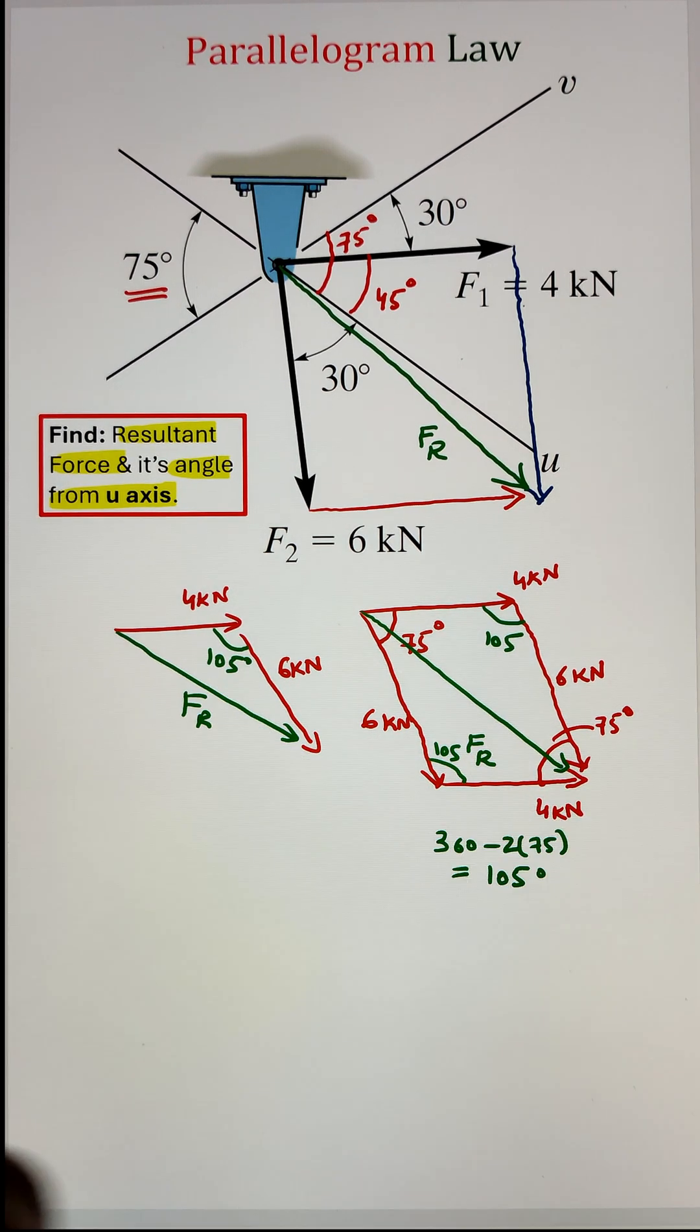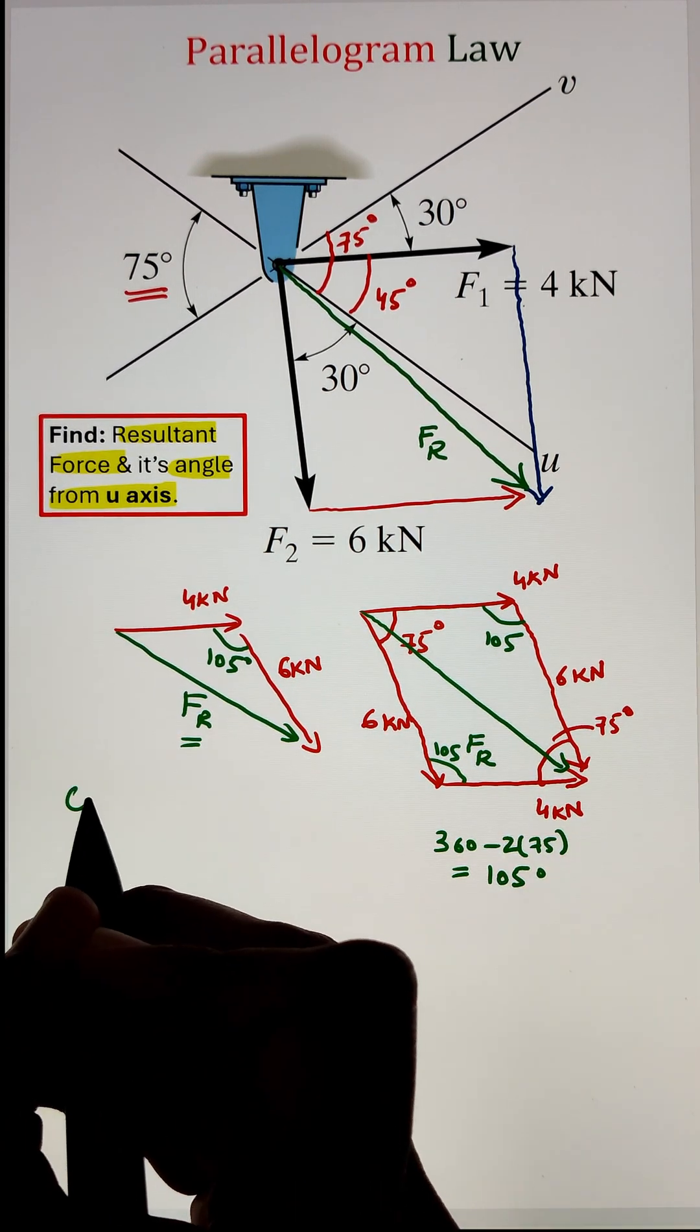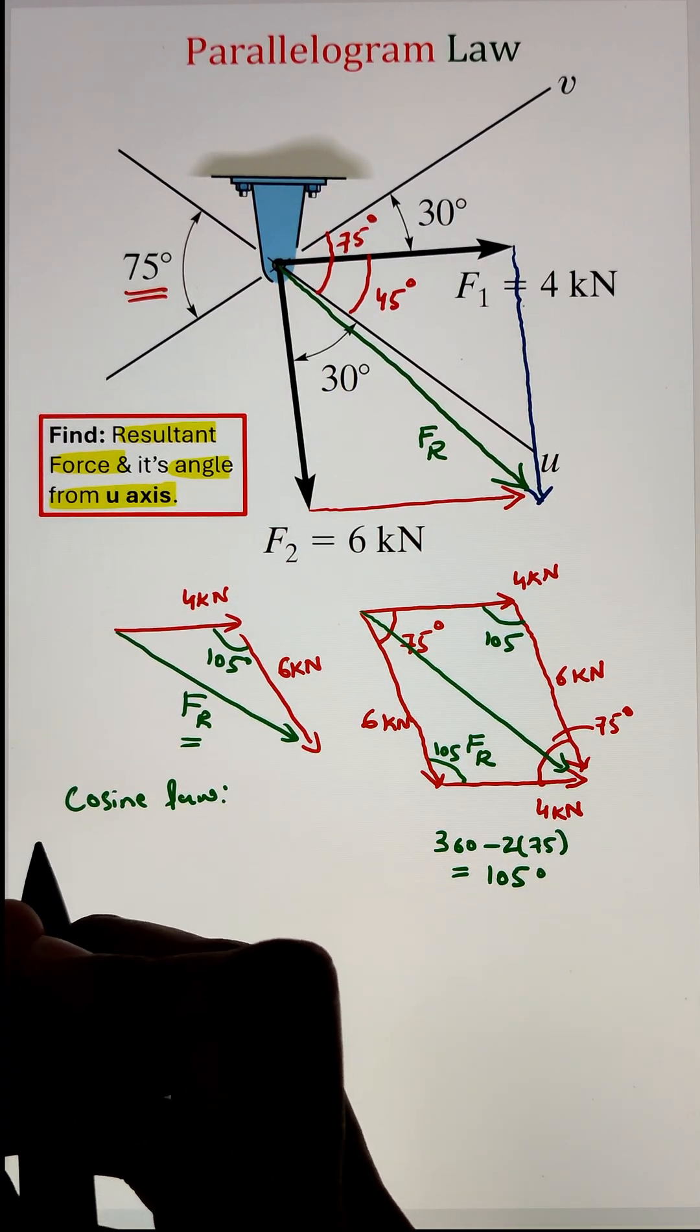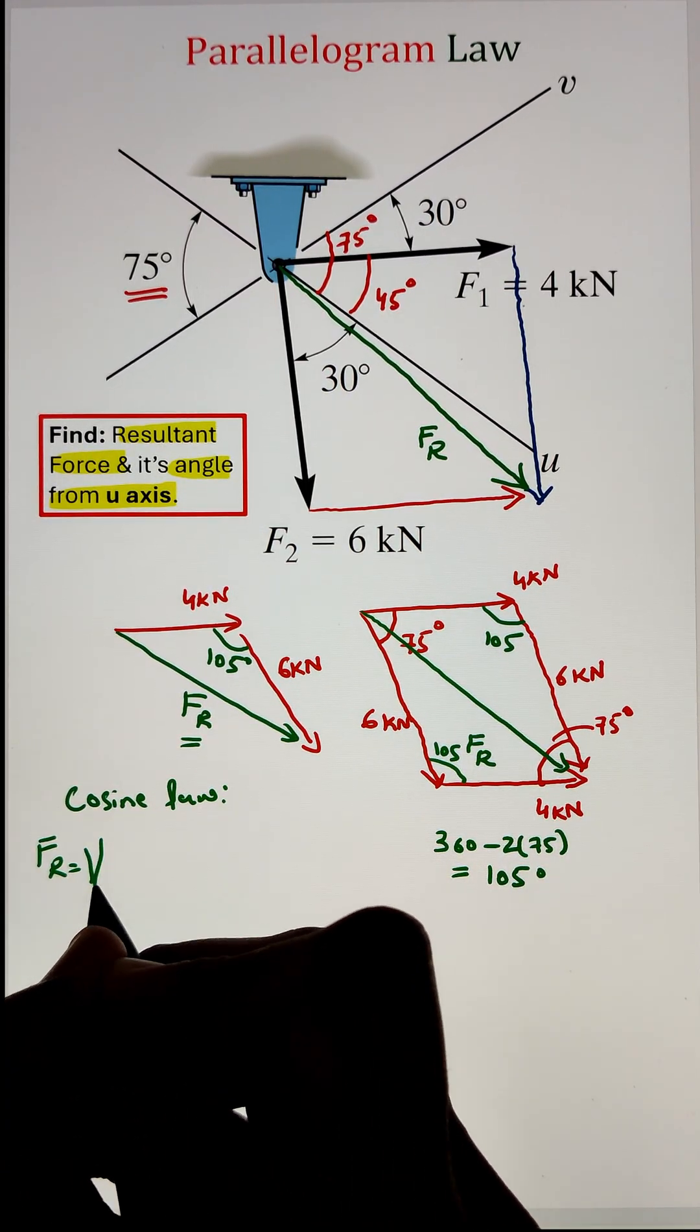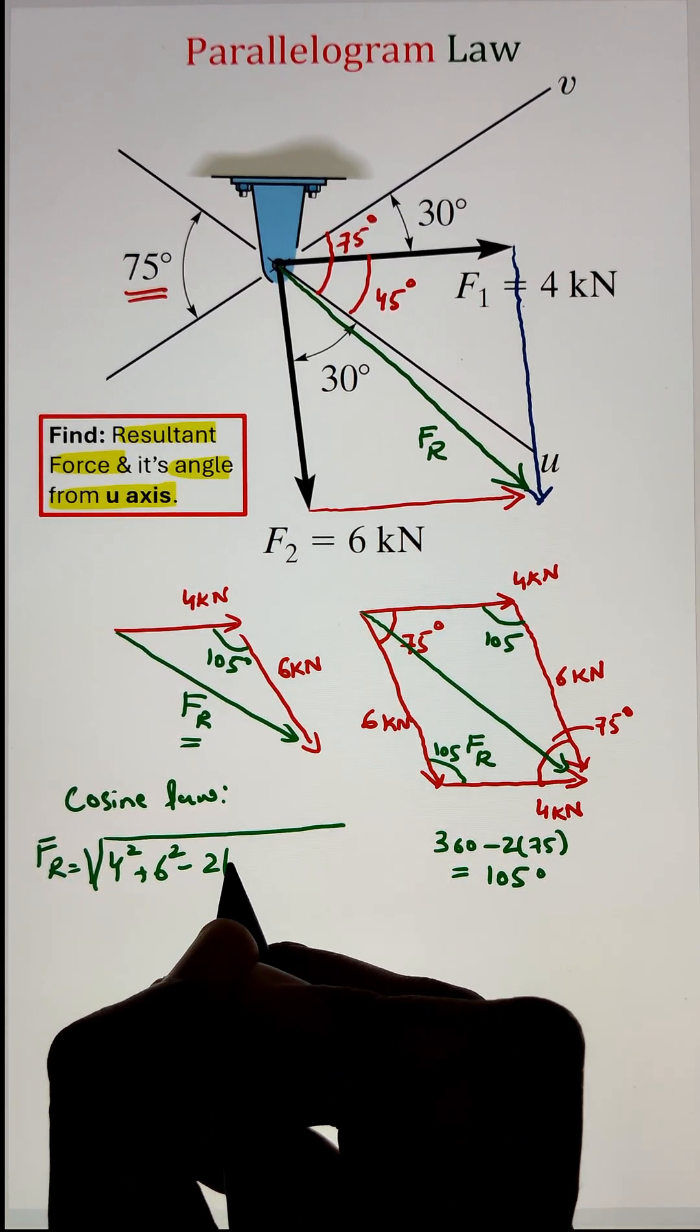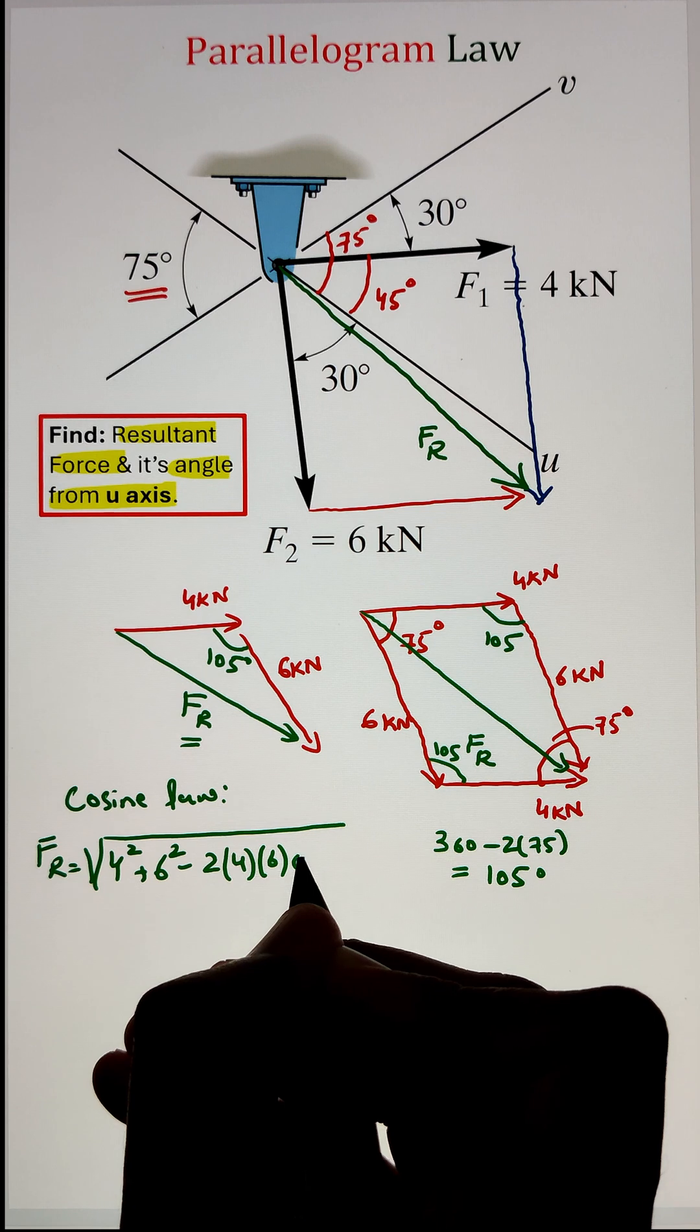Now, once we have the resultant force, we still need to identify the angle. Here, for the triangle, we have an unknown angle theta between our force of 4 kN and the resultant force. We can identify that angle by applying our sine law.